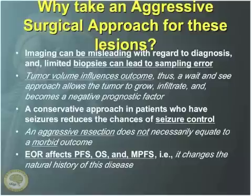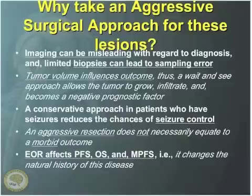Let's look at some of the reasons why we should take an aggressive surgical approach. First, imaging can be quite misleading with regard to the diagnosis. Whenever we do a biopsy that's undirected — meaning just on an MRI scan — we can see sampling error. The other thing to keep in mind is that tumor volume tends to be a very negative prognostic factor.